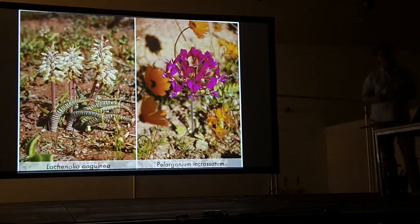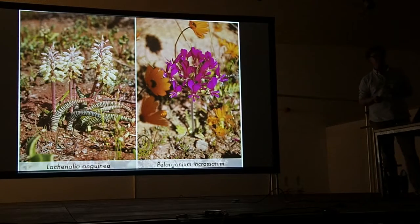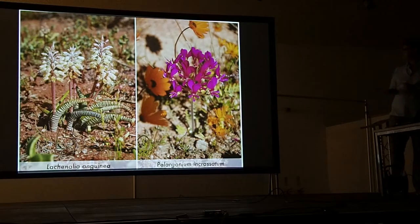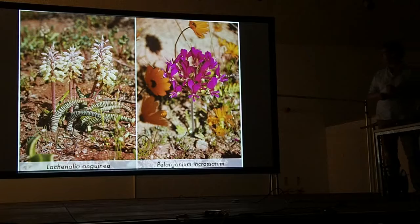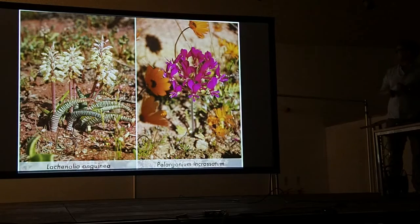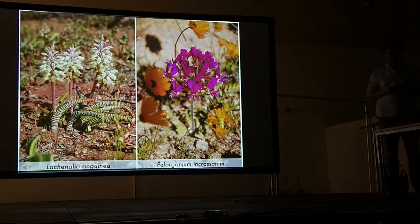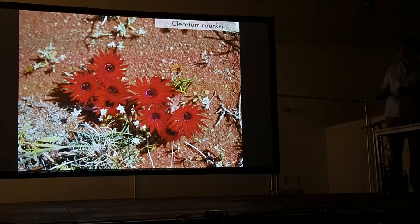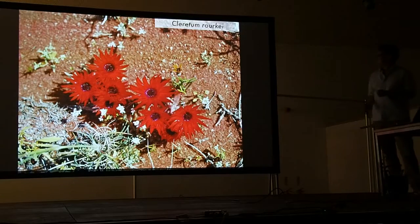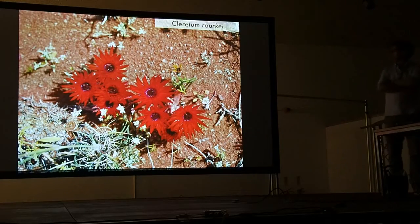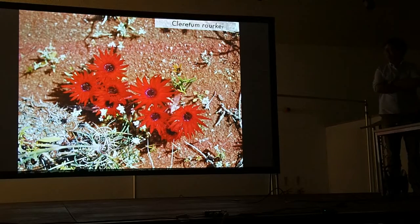Here are some other examples of geophytes I found in Namaqualand. This is Pelargonium vinaceum and Lachenalia angustifolia, which has really attractive striped leaves. This is a Chlroita marochii, an annual succulent in the Aizoaceae family.